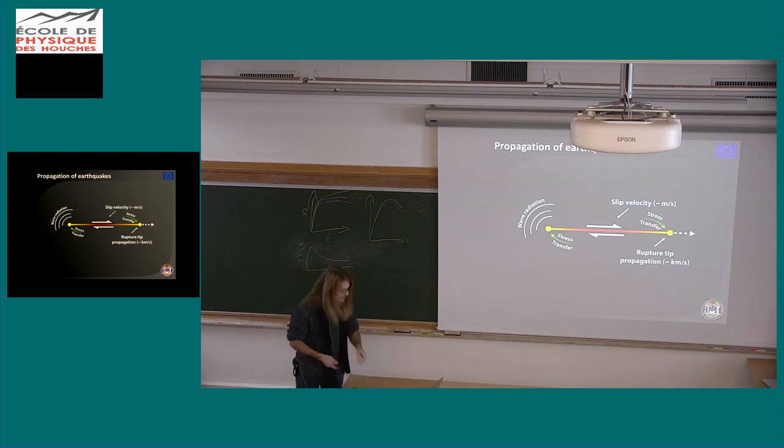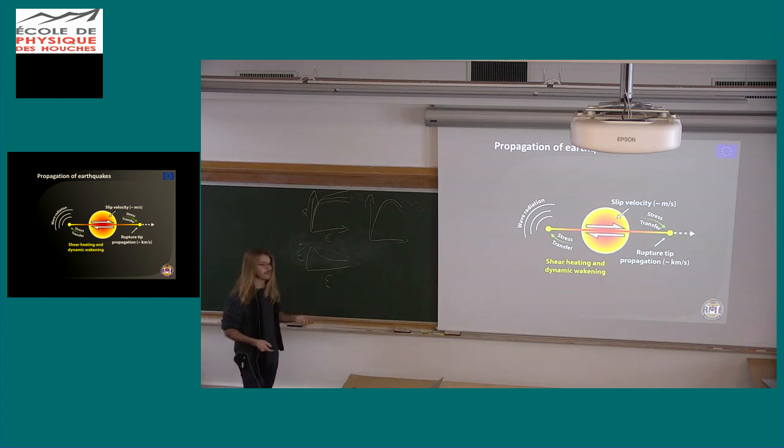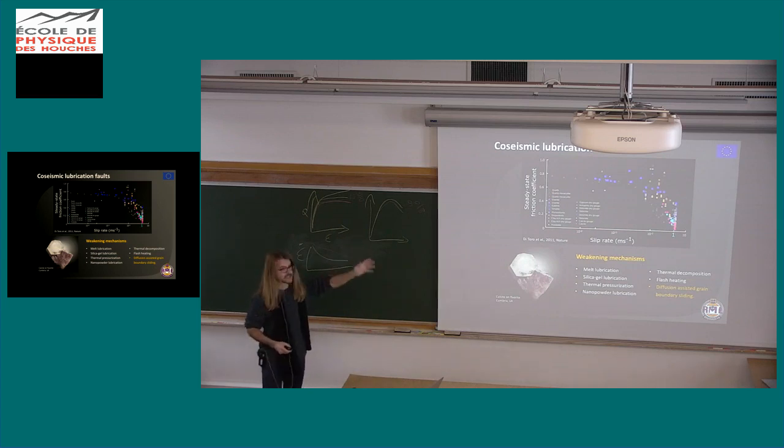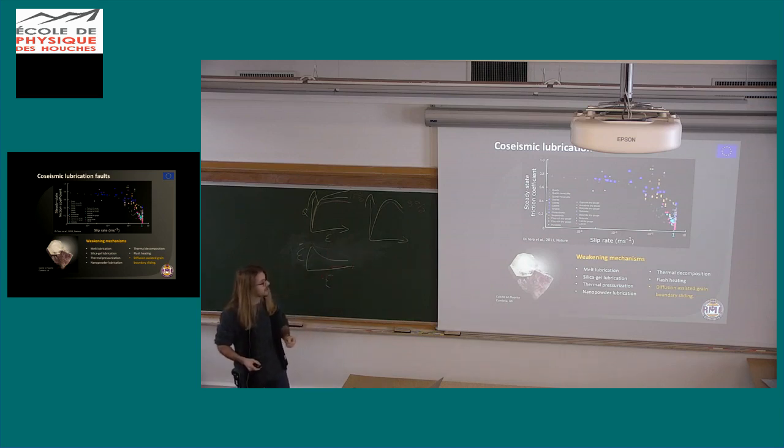In order to do that, along the fault there are thermally activated mechanisms that reduce fault strength by dynamic weakening. As shown in the previous presentation, we have this nice graph that comprises many different experiments that show at high velocity the friction coefficient is reduced, but every single experiment done with different material needs a different explanation. So we have different weakening mechanisms, each with its own physical characterization, more or less empirical.